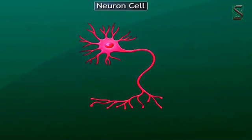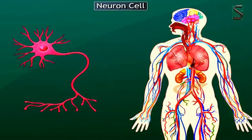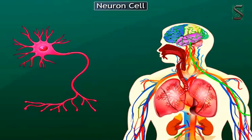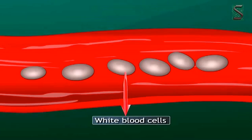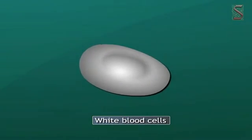For example, a nerve cell or neuron is long and branched. The branched structure of a neuron helps it to conduct messages to all parts of the body, to the brain and vice versa. The white blood corpuscle WBC is the only animal cell that changes its shape.